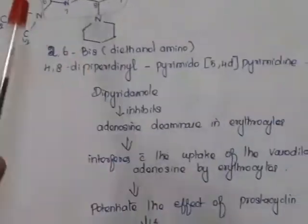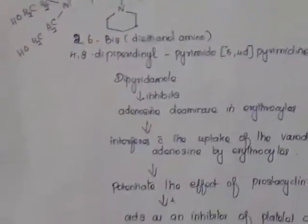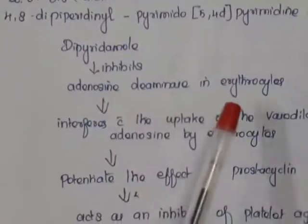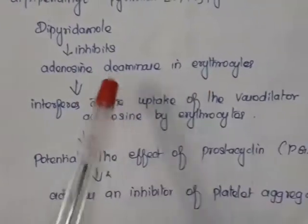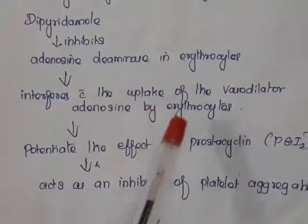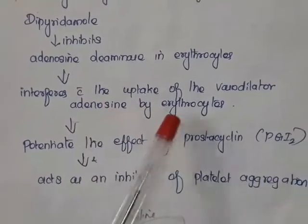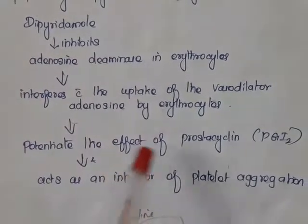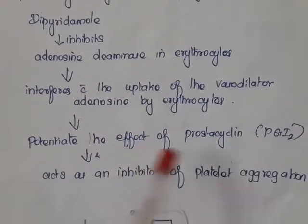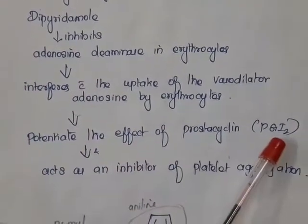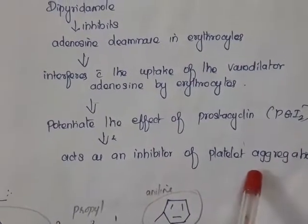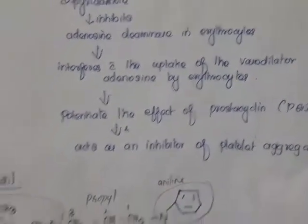Dipyridamole is an antithrombotic agent. It inhibits the enzyme adenosine deaminase in erythrocytes and interferes with the uptake of adenosine by erythrocytes. Because of this, the effect of prostacyclin is potentiated, and prostacyclin acts as an inhibitor of platelet aggregation.